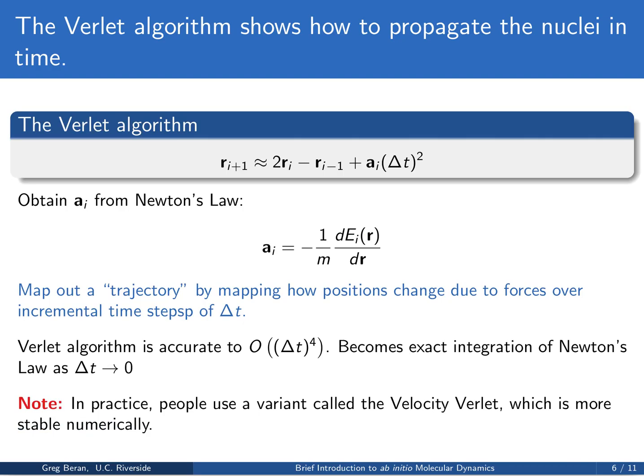This is our approximation. The accelerations we can get from Newton's law, F equals ma, where F is equal to the derivative of the energy with respect to nuclear positions. So the acceleration is just negative one over the mass times the gradient of the energy with respect to nuclear positions. This allows us to map out a trajectory for how positions change due to forces over incremental time steps of delta T, starting from some initial coordinates and propagating in time, repeating in increments of delta T until we've mapped out the full time evolution.